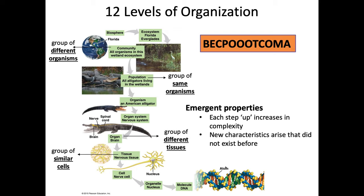At the very bottom level, you have an atom. Atoms are very simple and can come together to form what's called a molecule. An example of a molecule is DNA, and we are made up of DNA. DNA is the blueprint of what makes who we are. These molecules come together to form an organelle. An example of an organelle is a nucleus, where our DNA is housed and contained.